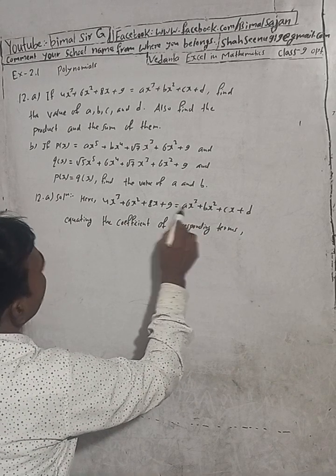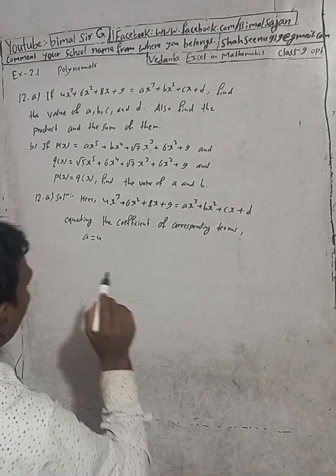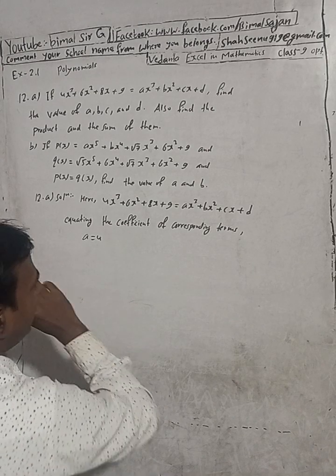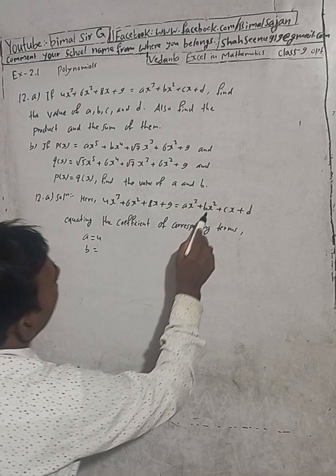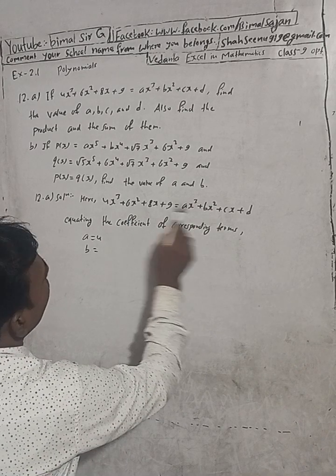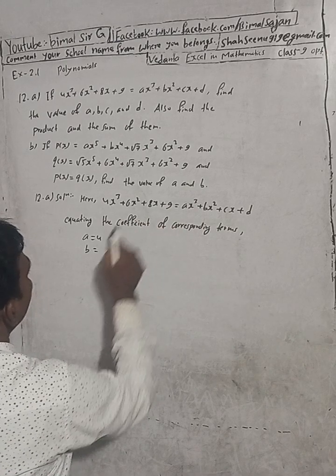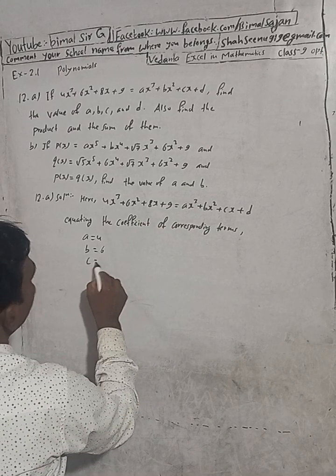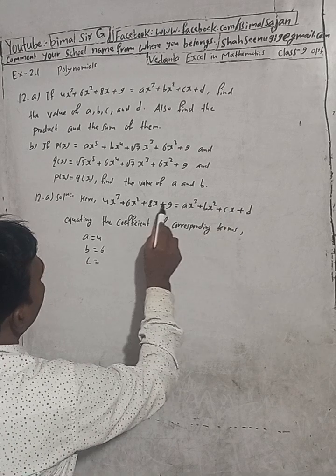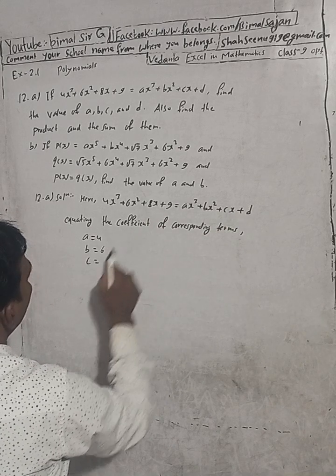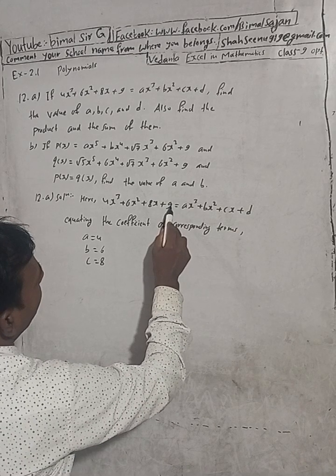Equating the x³ terms: a is equal to 4. Equating the x² terms: b is equal to 6. Equating the x terms: c is equal to 8. And the constant term gives us d is equal to 9.